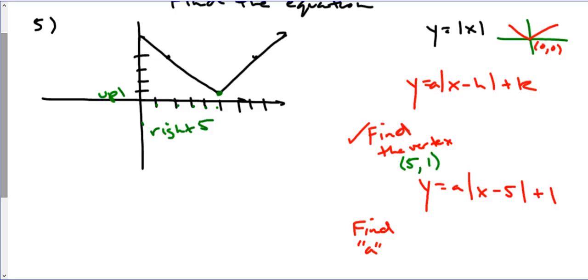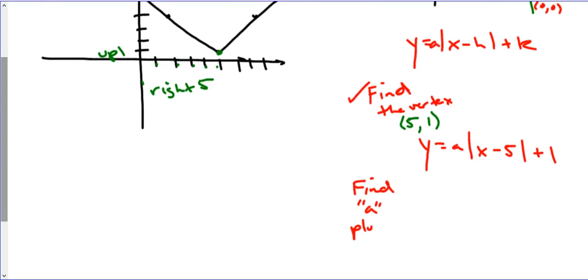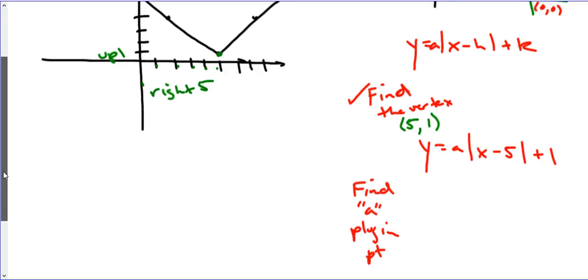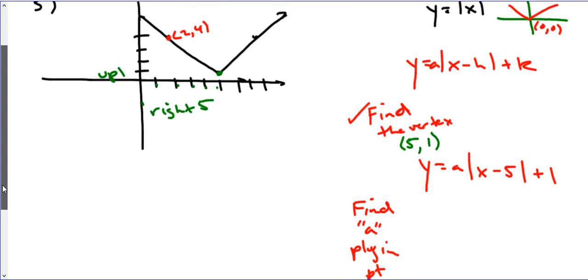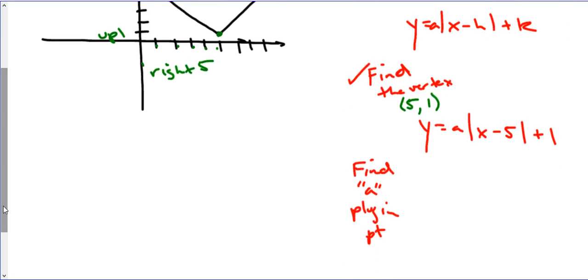To find the A value, we need to plug in a point other than the vertex. Over here, we got another point. It appears that I have a point right there of 2, 4. So I'm going to use this point 2, 4.